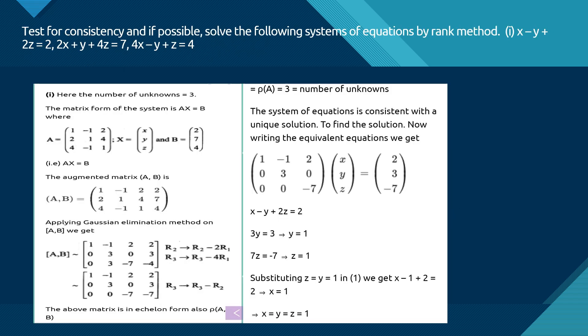Here is a problem on consistency. Test for consistency and if possible, solve the following system of equations by rank method: x - y + 2z = 2, 2x + y + 4z = 7.